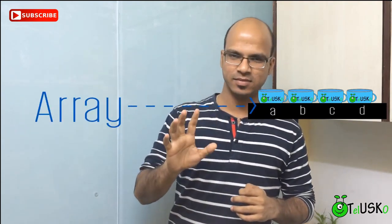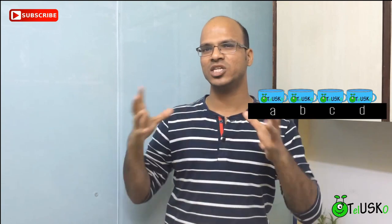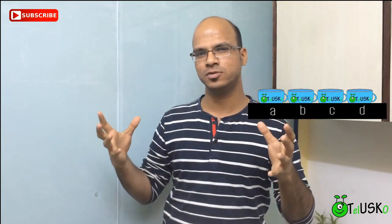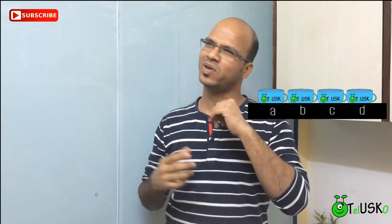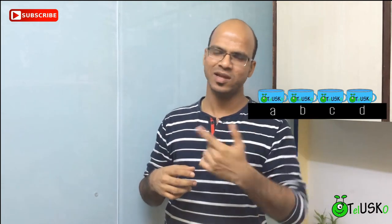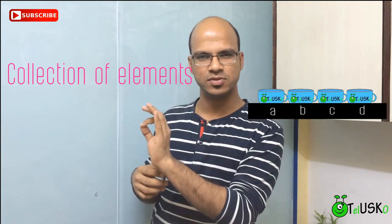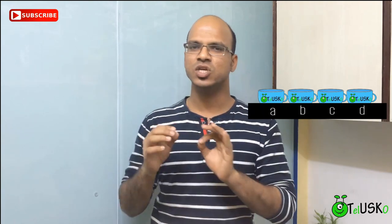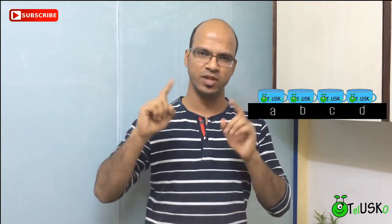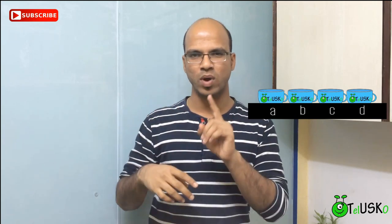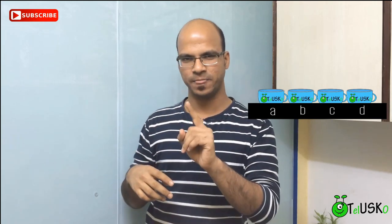That one tray is an array. So what is an array? It's a collection of cups — just like a tray is a collection of cups. So instead of having four different variables, you create one big variable which has four values. That is one array.